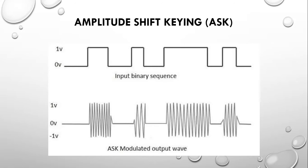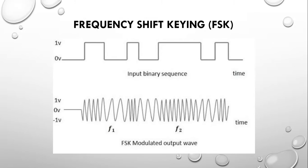Frequency shift keying (FSK) varies the frequency of the carrier signal according to the digital signal. FSK is a scheme of frequency modulation and is less susceptible to errors than ASK. The receiver looks for specific frequency changes over a number of intervals.